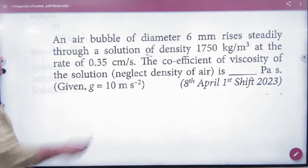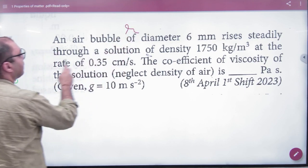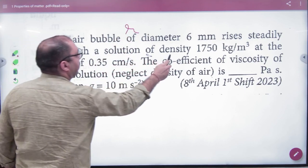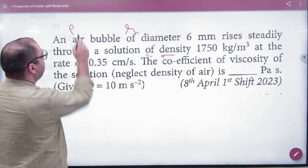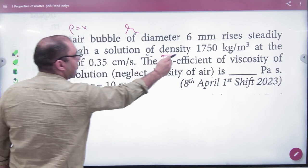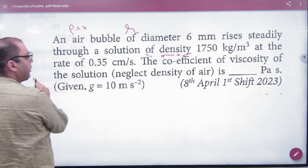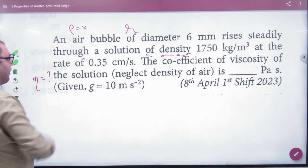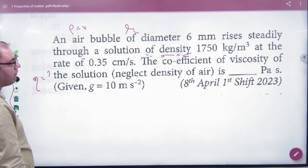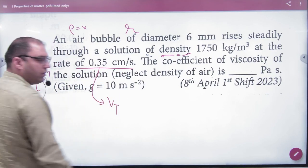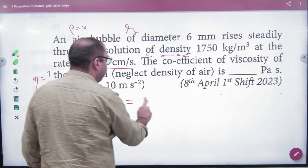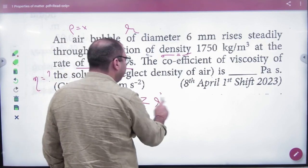An air bubble with given diameter rises through a solution of given density σ. The coefficient of viscosity of the solution is to be found. The velocity is given, which is the terminal velocity. Here's a trick: